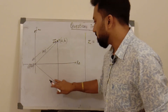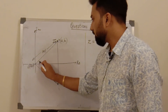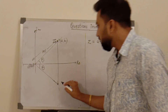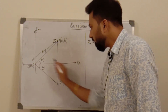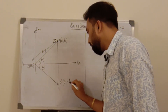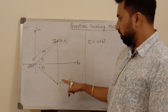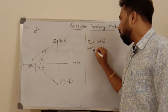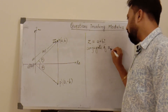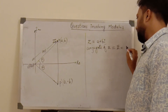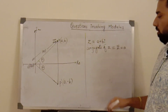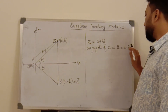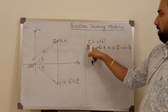Now we take another complex number which is the image of complex number z in the real axis. We observe that angle theta and this angle theta are both the same because these are two congruent triangles. This point is P' with coordinates (a, −b). There is a concept of conjugate: if complex number z is a + ib, then the conjugate of z, written as z-bar, is a − ib.